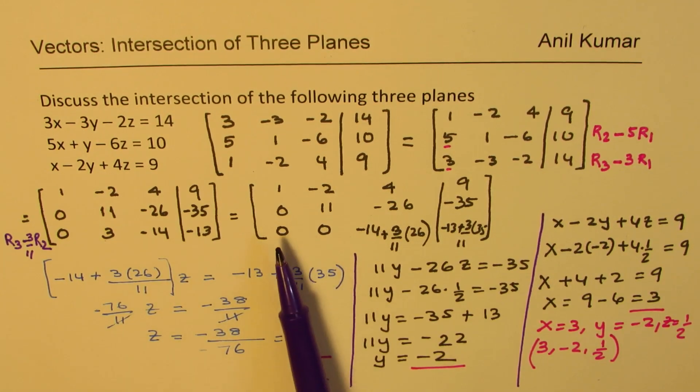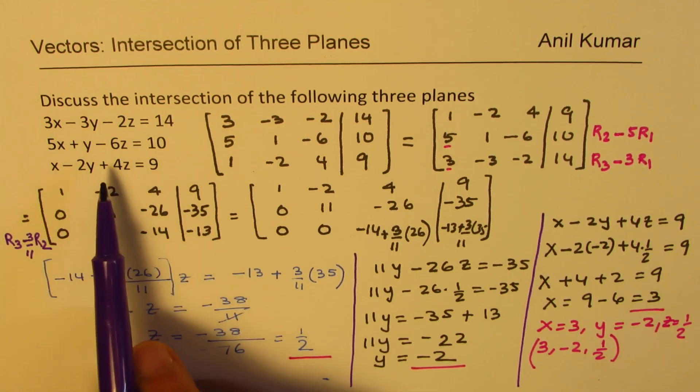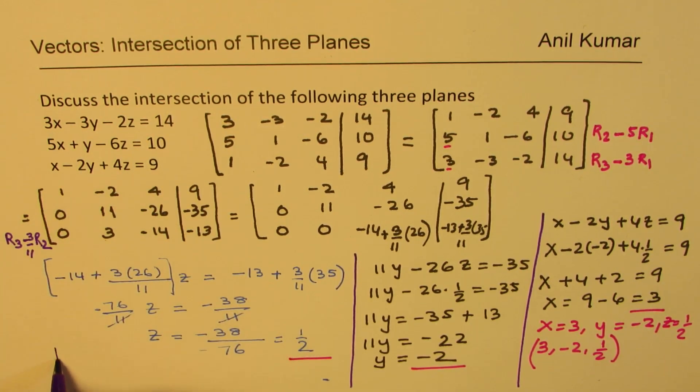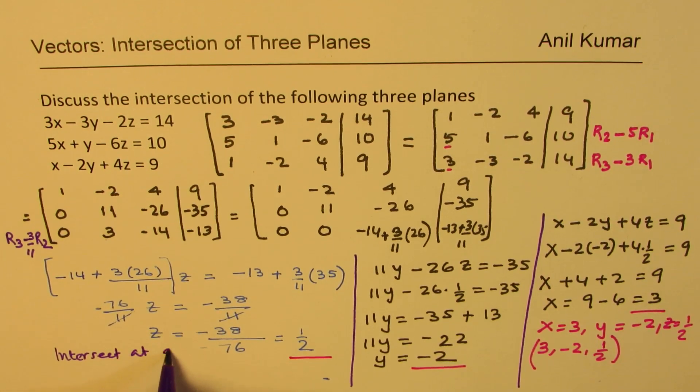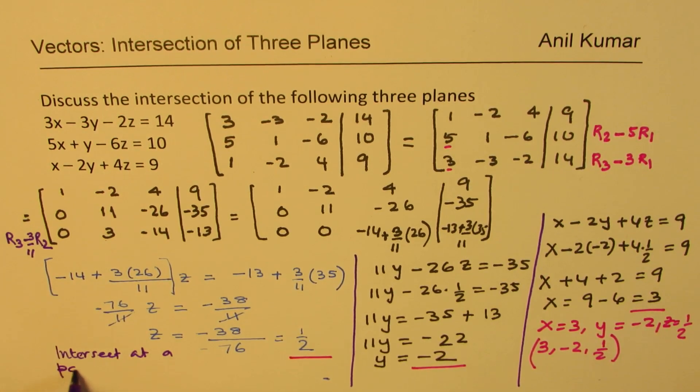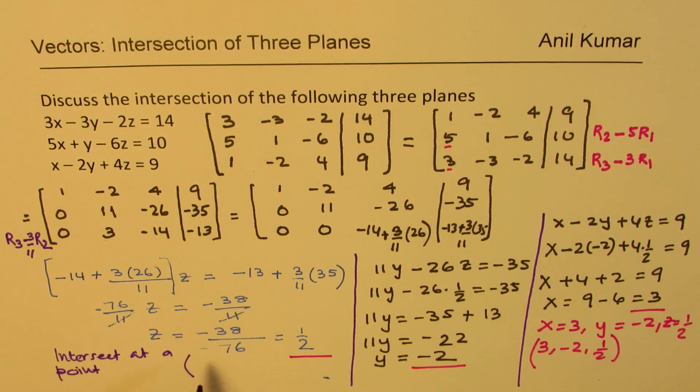So clearly, what you get from here is that there is a point of intersection. So these three planes intersect at a point. And in this case, the point of intersection is 3, minus 2, half. Perfect.